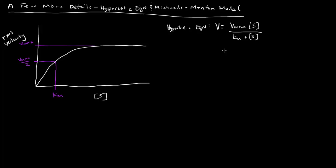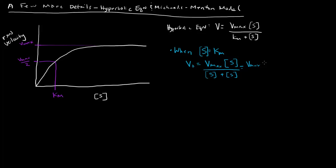What should you expect when the substrate concentration is equal to the Km? We know that we should have V equal to Vmax over 2. Let's actually show this mathematically. If the substrate concentration is equal to the Km, we replace Km with the substrate concentration: V = Vmax × [S] / (Km + [S]). Since Km equals [S], we get Vmax × [S] / (2[S]). The substrate concentrations cancel and we get Vmax over 2. So the velocity when [S] = Km is Vmax over 2.